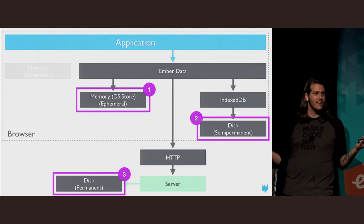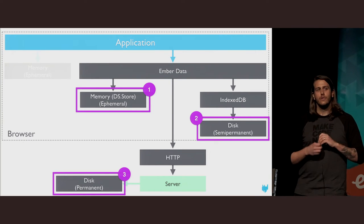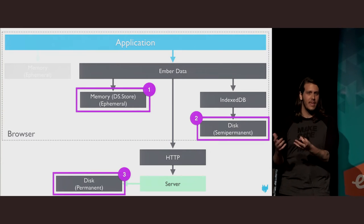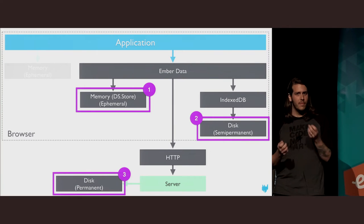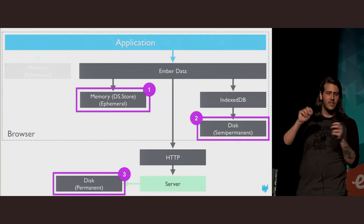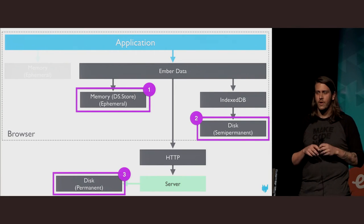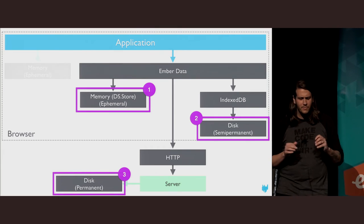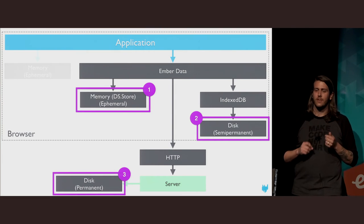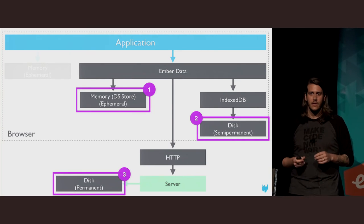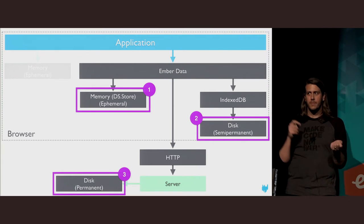Some benefits of semi-permanent state include minimizing data loss. Since you're writing data to disk immediately in the browser, you have guarantees that if something happens at that time, that state has been persisted semi-permanently and you can carry on. We can also synchronize asynchronously behind the scenes between our semi-permanent store and our permanent store. The other aspect is that it allows us to create interfaces with zero latency — because we're writing to disk immediately, we can resolve our promises very quickly.